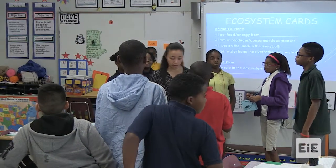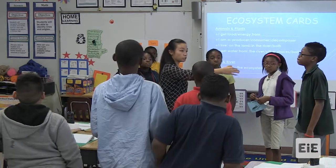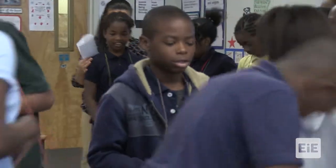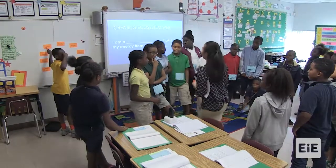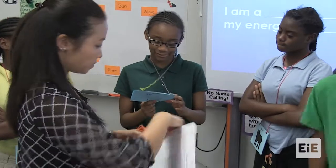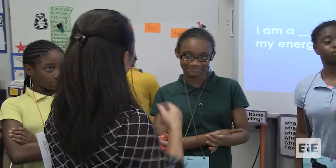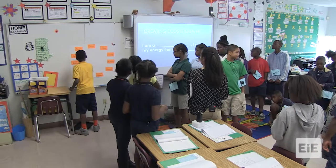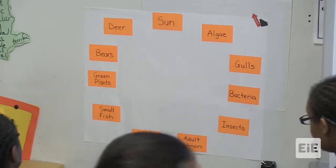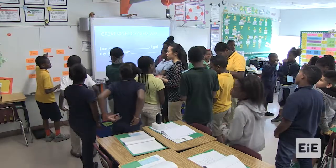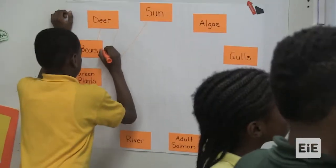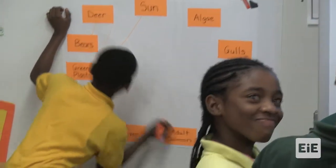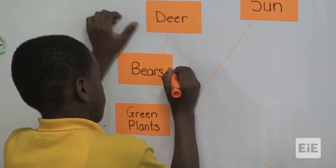Come and create a circle, standing next to whoever has the same card. Let's start with the deer — deer in the middle. What do you get energy from? Grass or plants. So we'll make a line from the deer to the green plants, showing the connection. Green plants connect to the Sun; bear connects to deer; also put a line to the adult salmon.